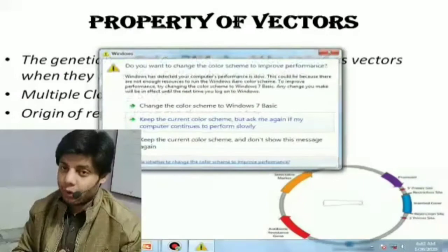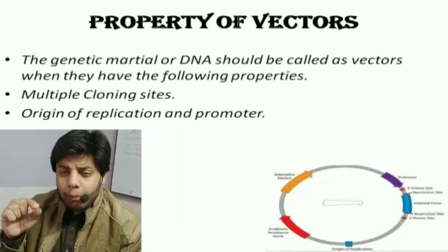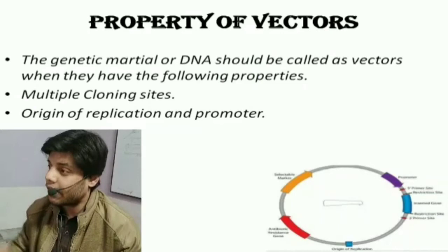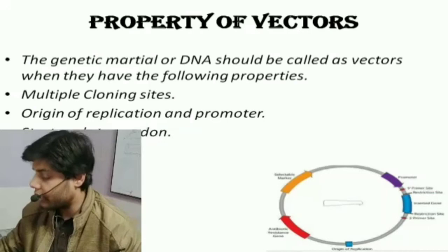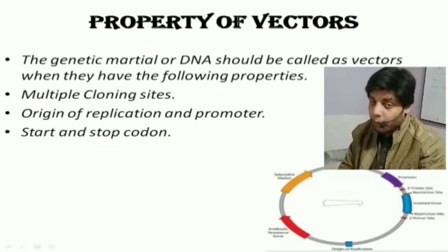The vector should also have an origin of replication — a specific site where replication starts — and a strong promoter, which is where RNA polymerase binds and transcription starts, and where DNA polymerase initiates replication.